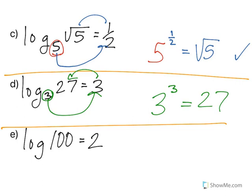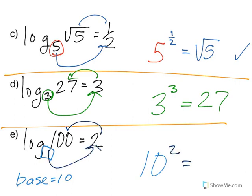In letter E, you'll notice there is no base given here. If you have a logarithm and there's no base given, it is automatically a base of 10. We call that a common logarithm. Therefore, my base is 10, and 10 squared equals 100. And that is converting from logarithmic form to exponential form.